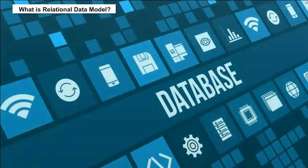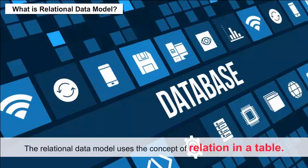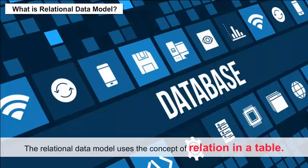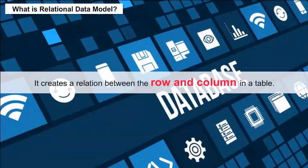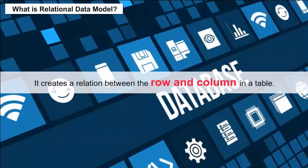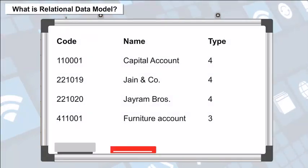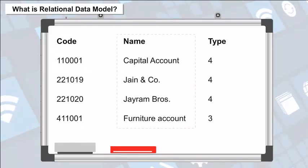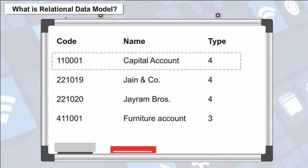RDBMS — the relational data model uses the concept of relation in a table. It creates a relation between the row and column in a table. We will take an example of the table 'Accounts'. The table has rows and columns; a column of the table is its name and data entered in rows.